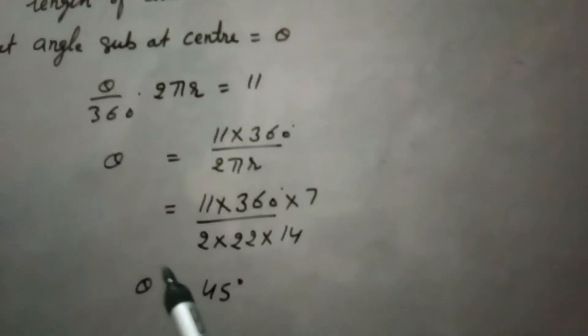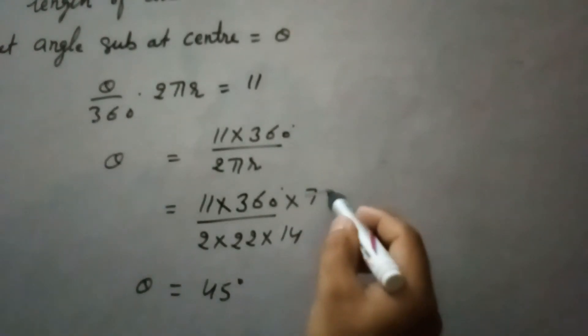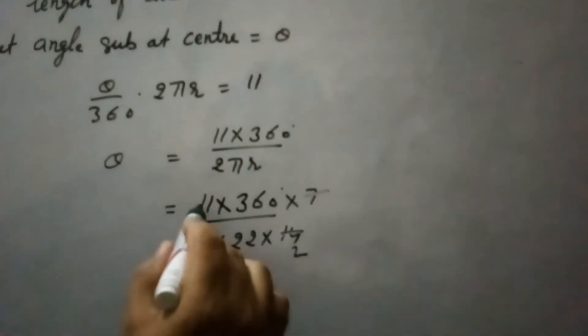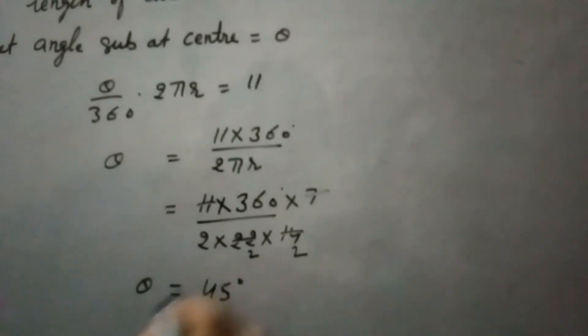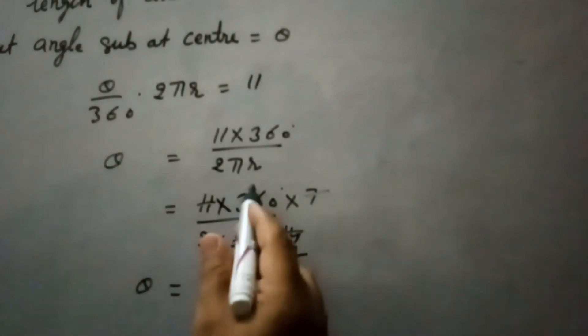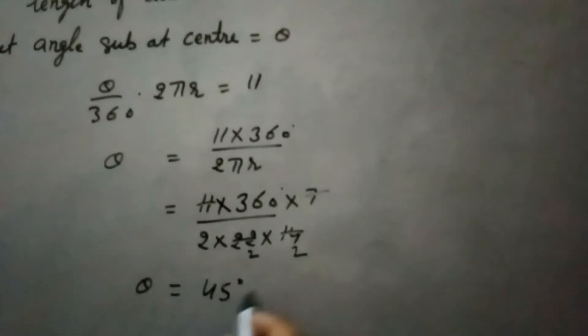So, after calculating and putting the values here: 7, 2s are 14, 11, 2s are... this is 8. When we divide 360 by 8, we will get 45 here. So 45 degrees is the angle subtended by this arc at the center of the circle.